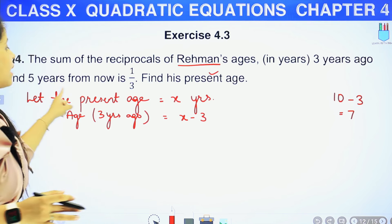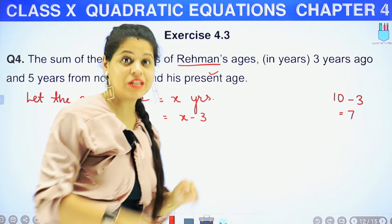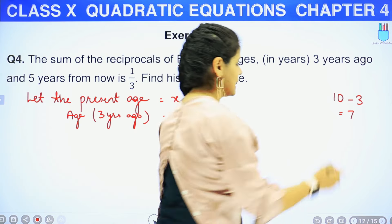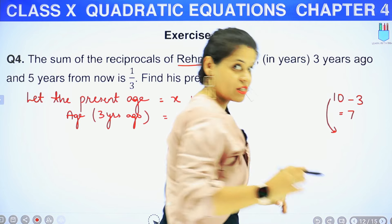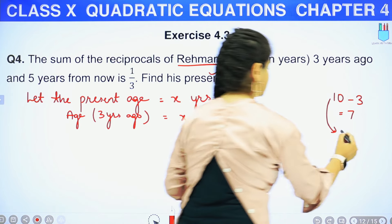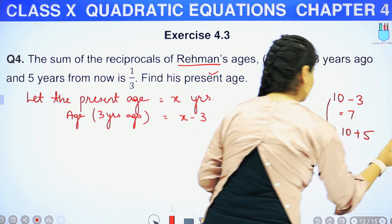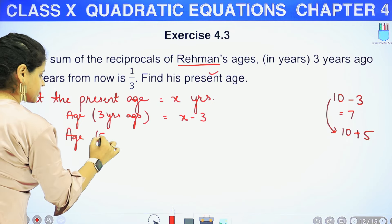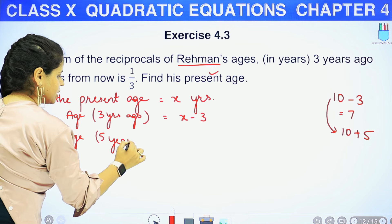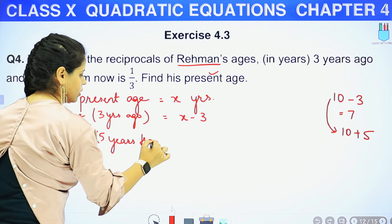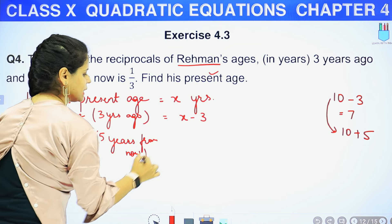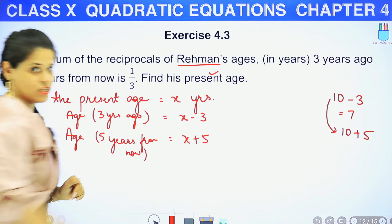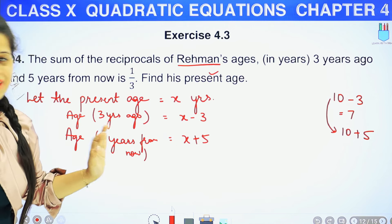Same चीज़ यहाँ पे बोला है — 5 years from now, मतलब अभी जो age है उससे 5 साल बाद. जैसे कि अगर आपकी age 10 years है, तो 5 साल बाद 10 plus 5 कर देंगे. यहाँ पे भी यही करेंगे. So age 5 years from now = X plus 5.